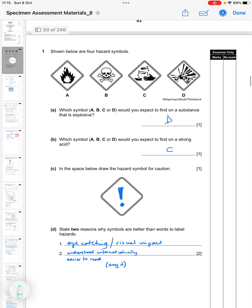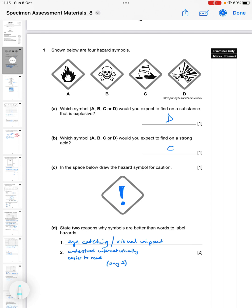Question one: shown below are four hazard symbols. Which symbol would you expect to find on a substance that's explosive? Obviously A would be flammable, B is toxic, C is corrosive, and D then is the correct answer, so that is explosive. Which one would you expect to find on a strong acid? That would be C which is corrosive.